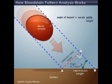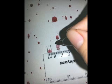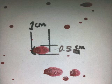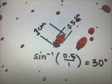There is actually a formula that forensics uses, which is the arcsine of width divided by the length. So here you can see that we chose a certain blood spatter to analyze and measure. The angle of the blood spatter that we found is 30 degrees.